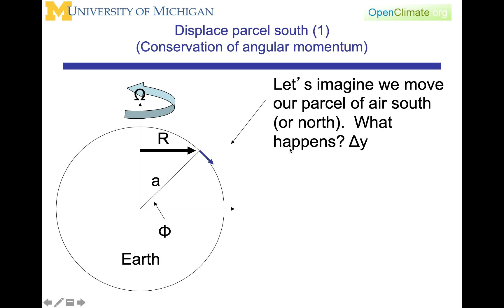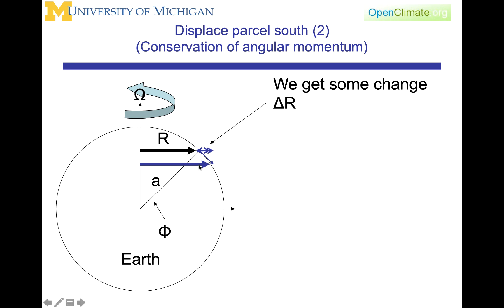What we're going to do now is take our idealized parcel of air and displace or move that air to the south or to the north. When we move it in the y direction, we are going to have a displacement of delta y, and we will assume that delta y will be small. Because we move delta y, we're going to get some change of the radius around the axis of rotation — some change delta r. Moving it from here to here leads to delta r getting bigger by some amount, as indicated in this figure.